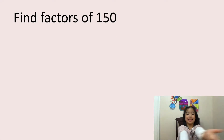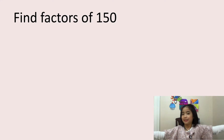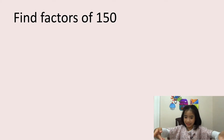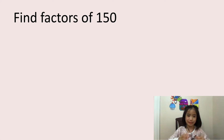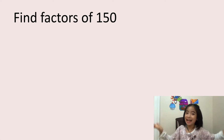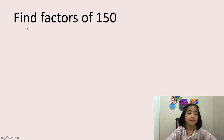Now let's look at this example: find factors of 150. So this time we won't use dots because there will be too many dots on the screen. So now let's figure this out. We know that the number and 1 are already factors of 150, so let's write 1 and 150 here.